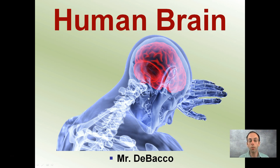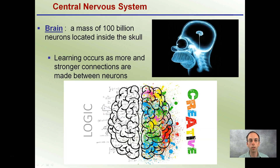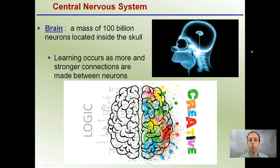Here we're going to look at some of the regions of the human brain and also go over some of the very important functions that these different regions are responsible for. Starting with the brain in general, it's a mass of about 100 billion neurons located inside the skull. This is where learning occurs, and this happens when more and stronger connections are made between neurons located in your brain.